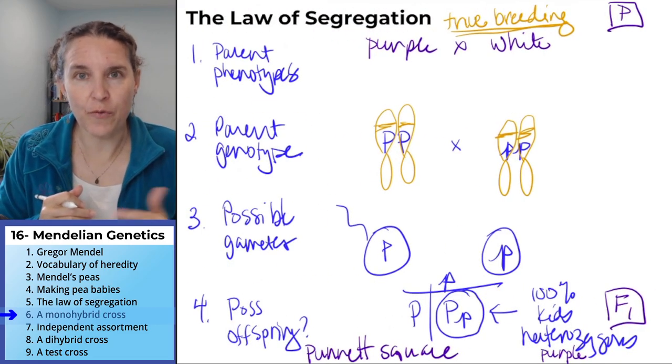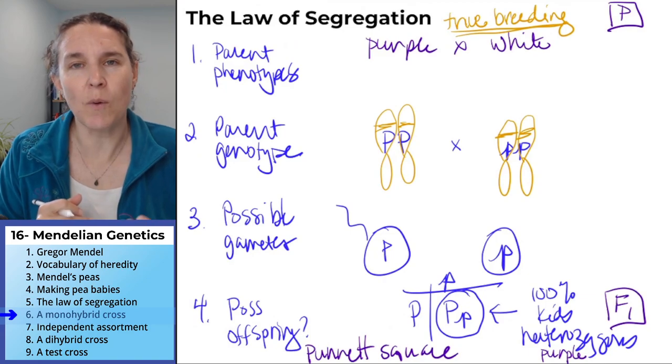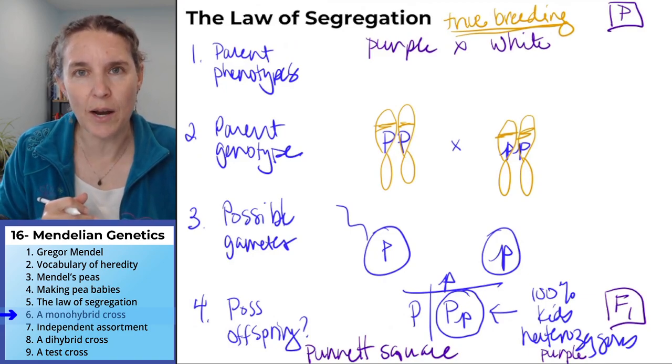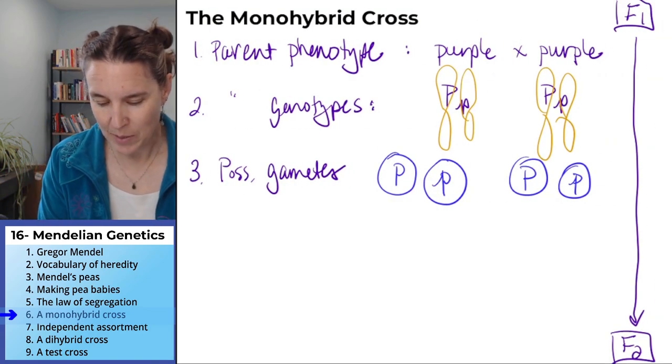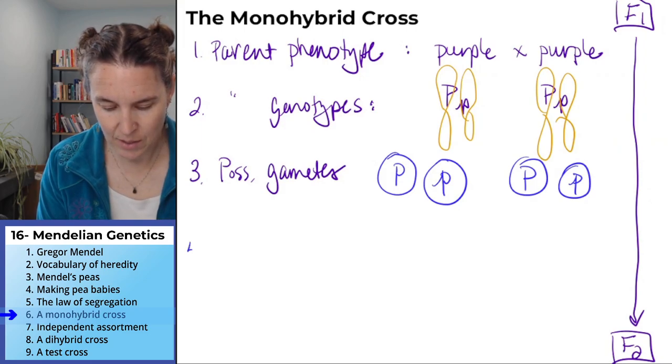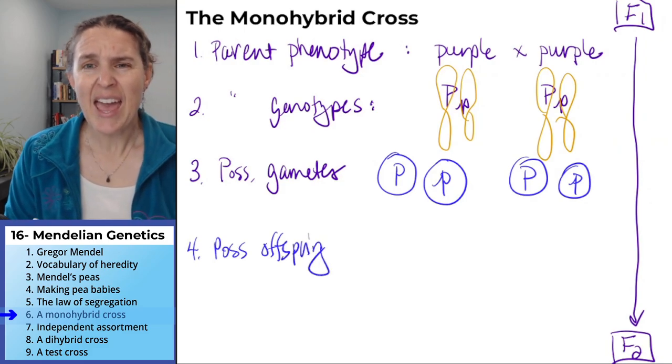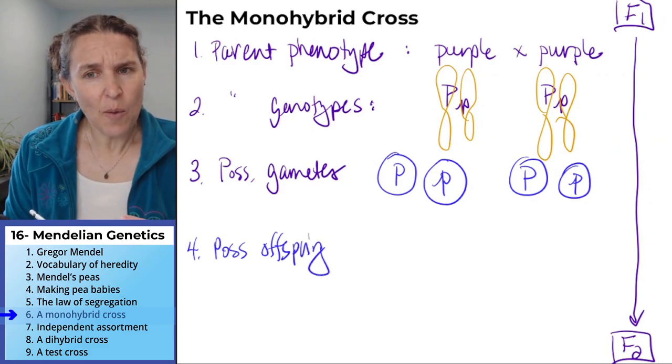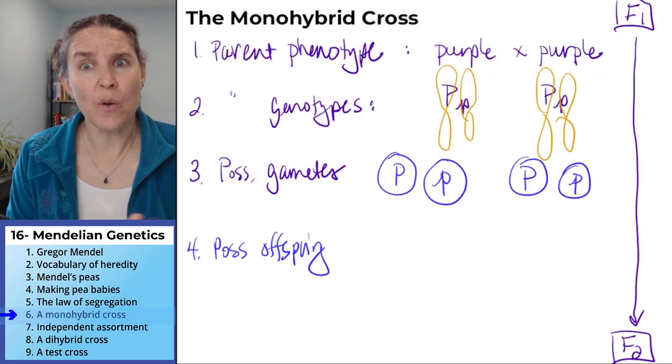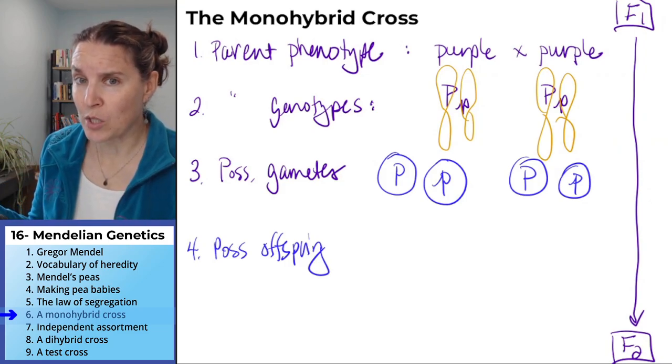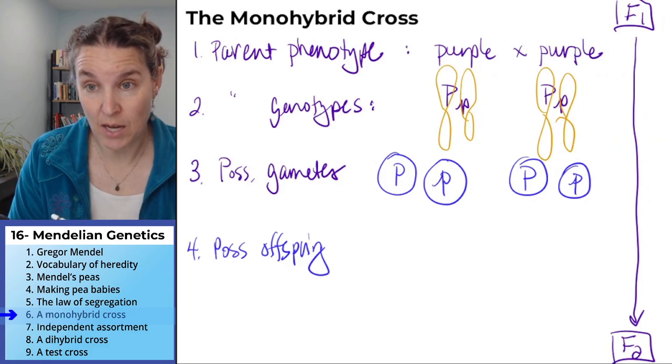And where before we were like, why even bother making a Punnett square? Our Punnett square is going to help us do our possible offspring, and it's going to help us so that when we are dealing with multiple genes, we don't get lost.